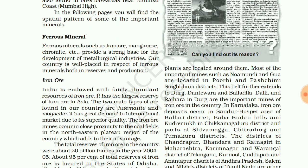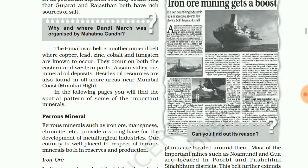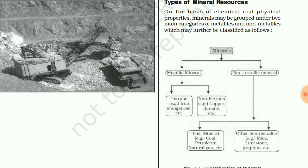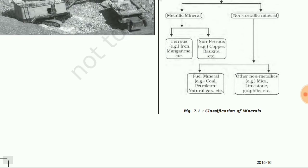Types of minerals and their definitions: metallic minerals are sources of metals and have metal content. Non-metallic minerals do not contain metal. Ferrous minerals have iron content; non-ferrous minerals do not. For non-metallic, organic minerals are derived from buried animal and plant life and are basically energy resources. Inorganic minerals originate by chemical reactions on the earth's surface such as hydration, oxidation, reduction, and pressure.